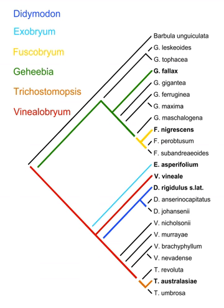Evolutionary taxonomy – also called evolutionary systematics or Darwinian classification – is a branch of biological classification that seeks to classify organisms using a combination of phylogenetic relationship, progenitor-descendant relationship, and degree of evolutionary change. This type of taxonomy may consider whole taxa rather than single species, so that groups of species can be inferred as giving rise to new groups. The concept found its most well-known form in the modern evolutionary synthesis of the early 1940s.